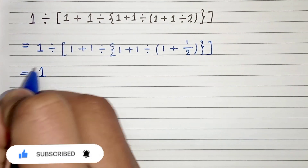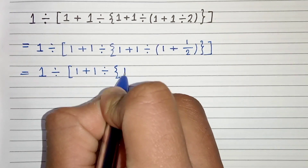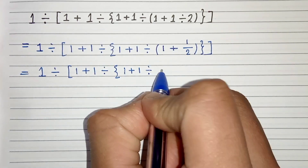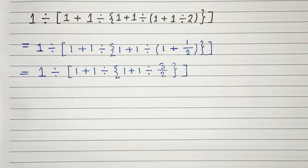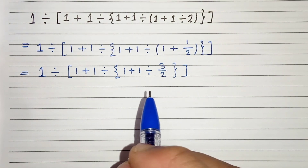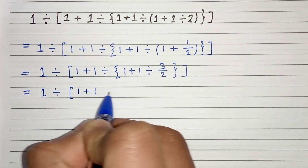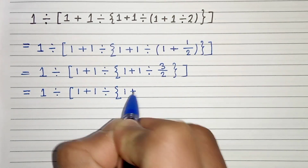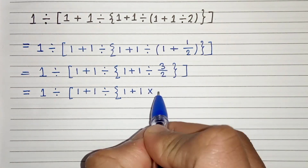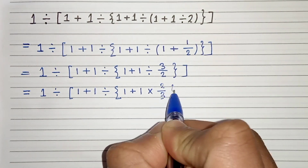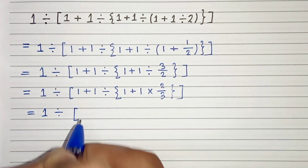In the next step: 1 divided by 1 plus 1 divided by the second bracket 1 plus 1 divided by 1 plus 1 half, which is 3 by 2. In the next step we can write 1 divided by 1 plus 1 divided by 1 plus — we write this division as multiplication, so 3 by 2 becomes 2 by 3.